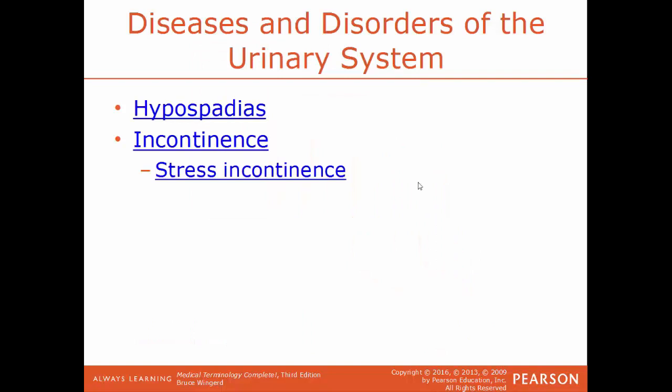Incontinence is the lack of control of normal urinary function — the unintentional loss of urine. An example is stress incontinence, where you have an unintentional loss of urine because of a physical activity or movement such as coughing, sneezing, running, or lifting something very heavy. Sometimes a small amount of urine may come out of the bladder — that's a form of stress incontinence.